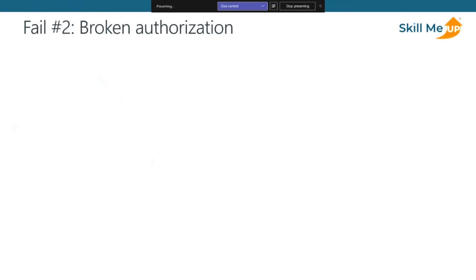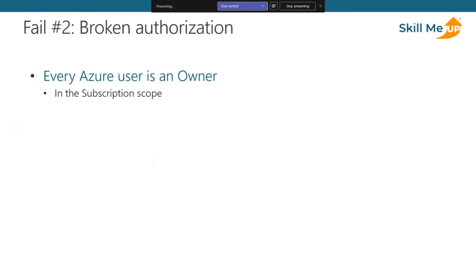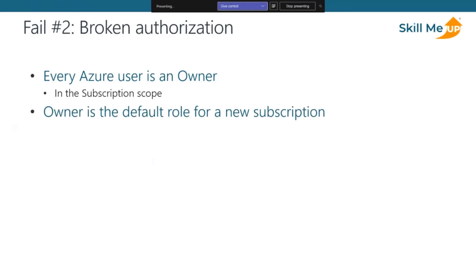Let's talk about broken authorization — and I really mean broken. A very typical case when I go to any environment is that every Azure user is an owner, and even worse, at the subscription scope. That means they can do almost anything within your Azure environment, including removing others' access or creating any amount of costs. Owner is the default role for new subscriptions, and in an agile and exploratory manner, new people just get added with the same access as the original, just in case.